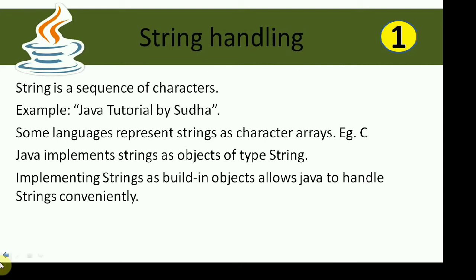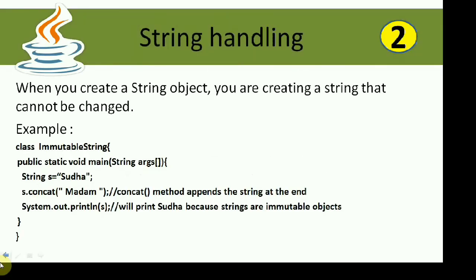When you create a string object, you are creating a string that cannot be changed. For example, here string s is equal to 'Sudha' and I call s.concatenate('madam'). When I try to print the value of s, I will be getting only 'Sudha', because no modifications will be done to the existing object — a new object will be created which is 'Sudha madam'.